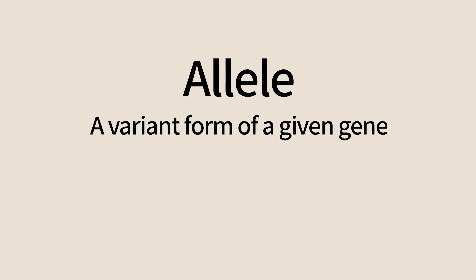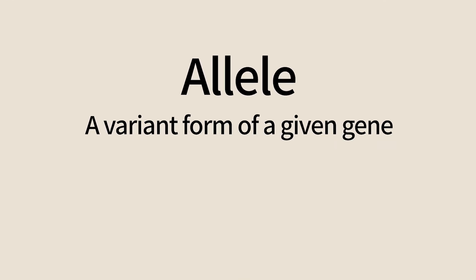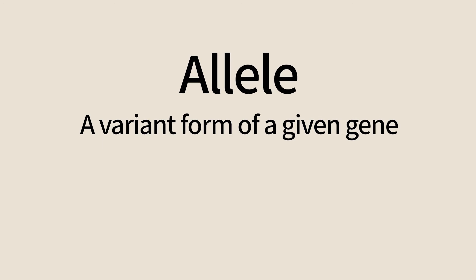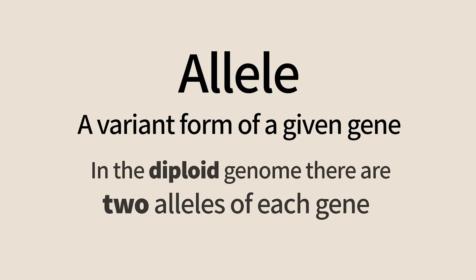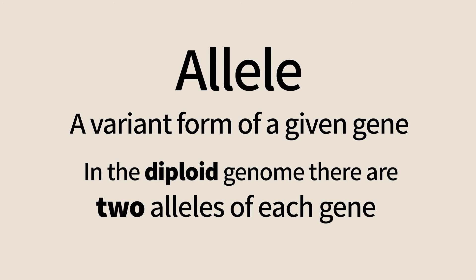Using this basic knowledge, we will explain the laws of genetics that Mendel discovered. The two copies of each diploid individual are very similar; however, in most cases they are not identical. The variability of the population is due to these differences. The two copies of each gene are called alleles, and in the diploid genome there are two alleles of each gene. These alleles can either be identical or different.